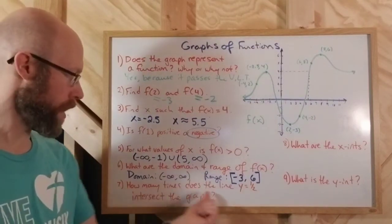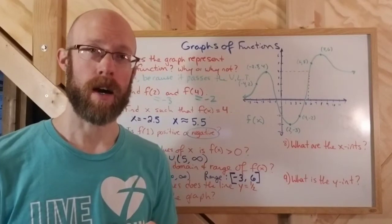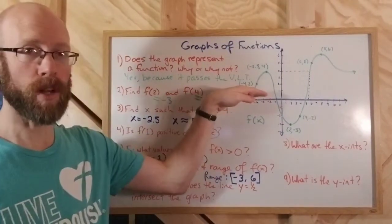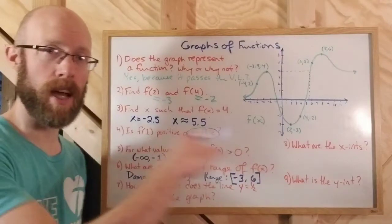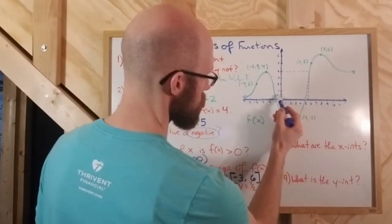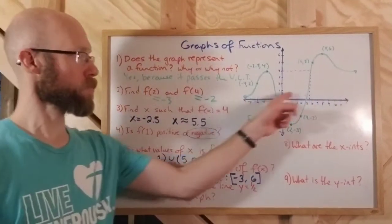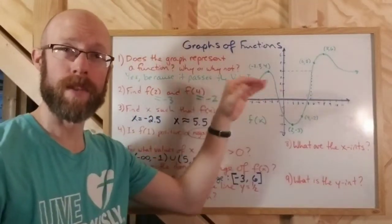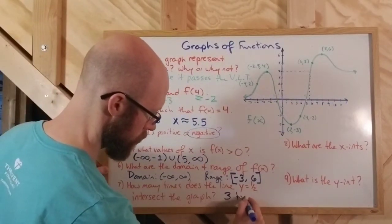How many times does the line y equals 1/2 intersect the graph? y equals 1/2 is a horizontal line — if you have y equals a number, that's always a horizontal line. This line is half a unit high and has a fixed constant height of 1/2. If you come up to 1/2 and go across, you're going to hit the graph once on the left, once in the middle area, and once over on the right. So it intersects the graph three times.